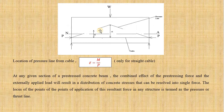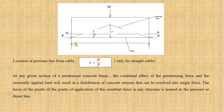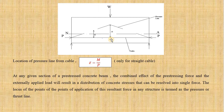The next case is a simply supported beam carrying a point load, with a cable subjected to pre-stressing force. When this point load is applied, the pressure line variation will be triangular. We measure or locate the variation of stresses from the cable.